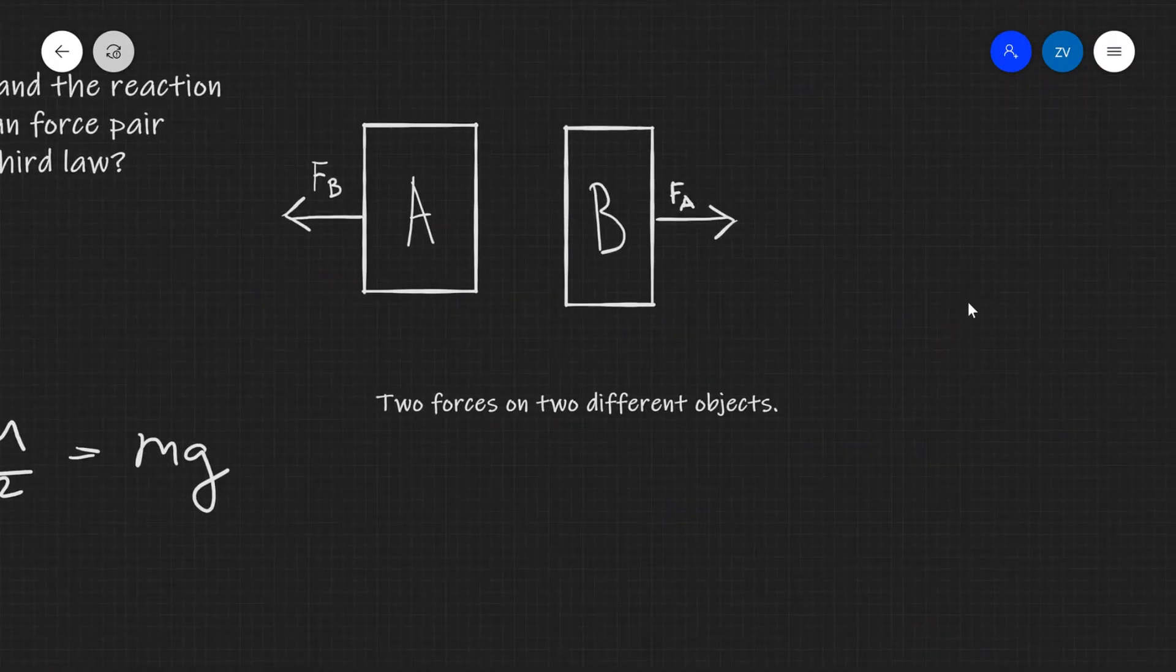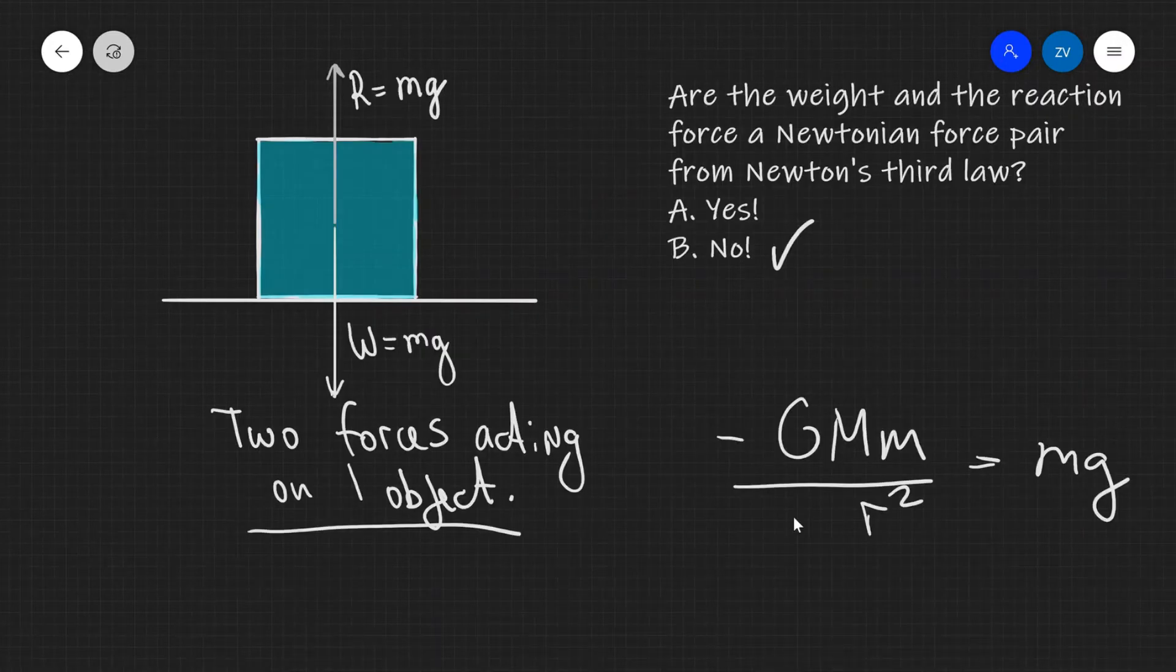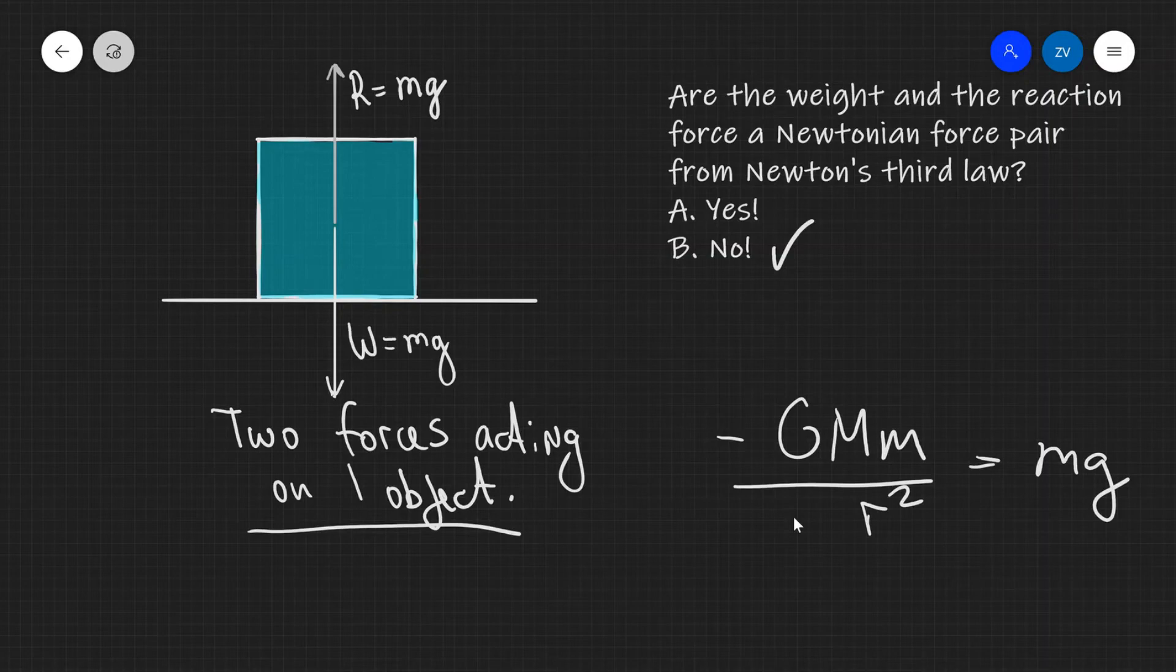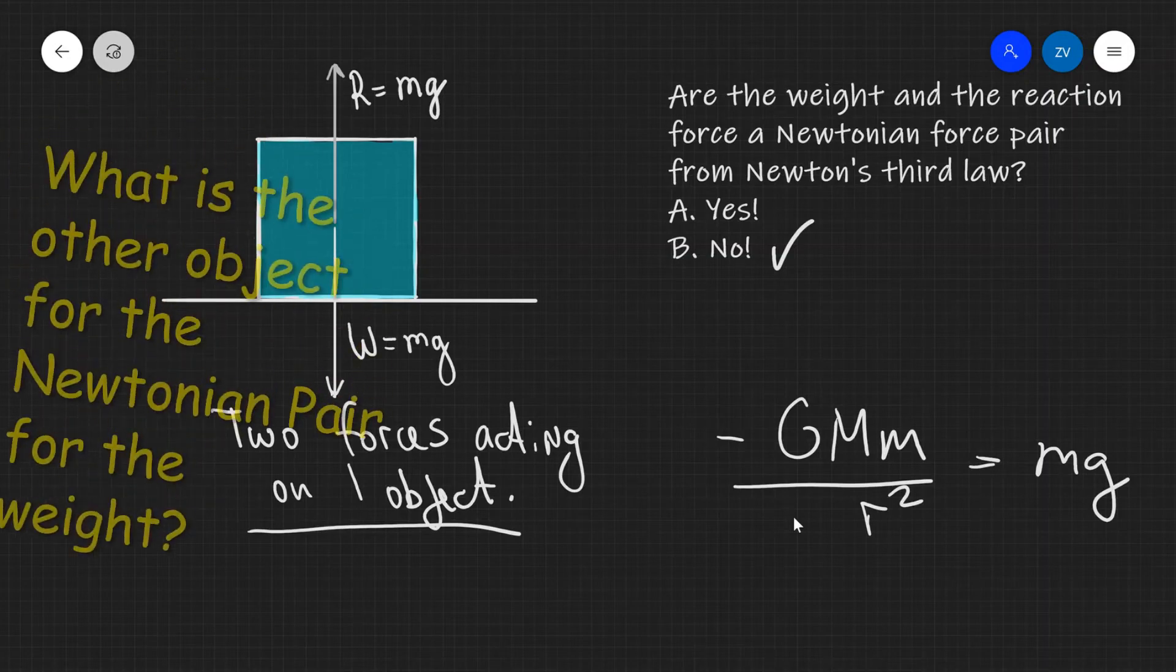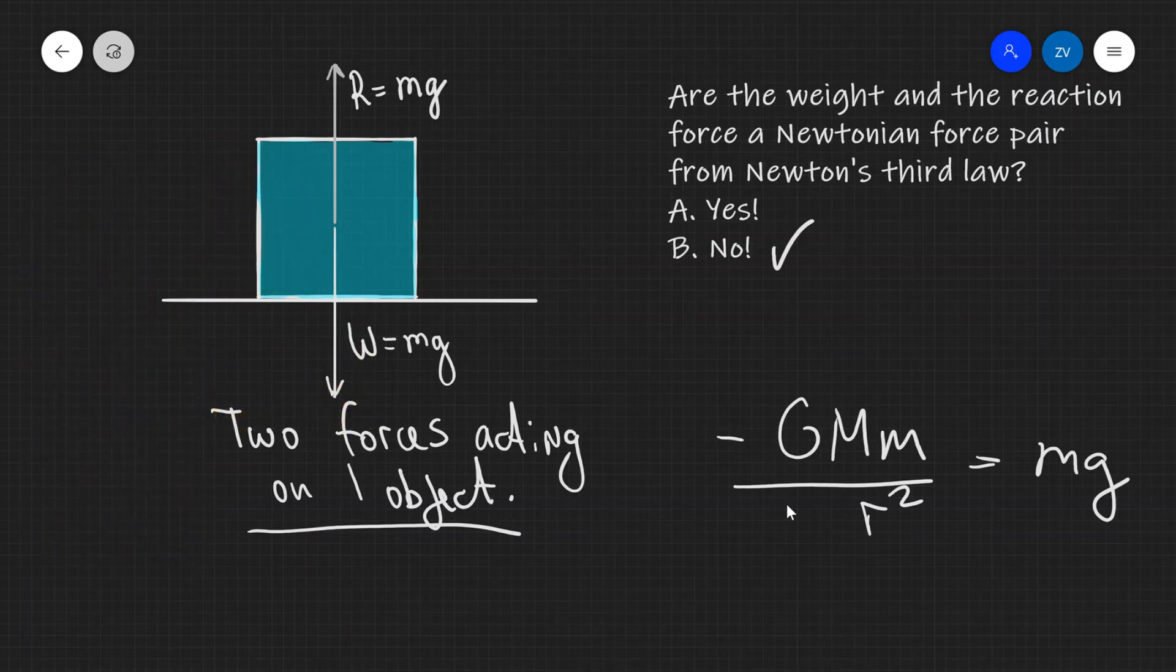An interesting question we can ask further is: what is the Newtonian pair of the weight? Surely for every action there is an equal and opposite reaction, as we know it from our GCSEs or A level. When two objects interact, they exert equal and opposite forces on each other.